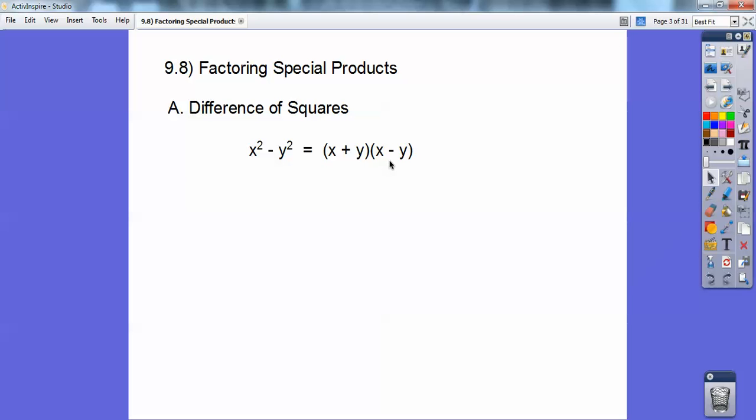x plus y times x minus y. And it's just the square root of the first one and the square root of the second one that goes in each of the parentheses. One has a plus, one has a minus.